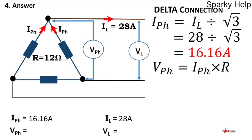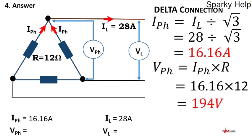Moving on: vp equals i-phase times R — Ohm's law again. We have the current and the resistance, so multiplying gives us the voltage across the resistor, which is v-phase. So 16.16 times 12 gives a phase voltage of 194 volts. In delta, vp equals vl, so both vp and vl are 194 volts. That finds all the voltages.